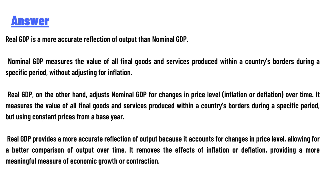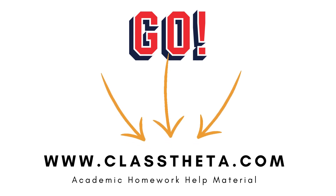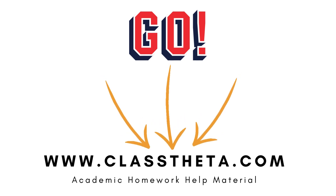Real GDP provides a more accurate reflection of output because it accounts for changes in price level, allowing for better comparison of output over time. It removes the effects of inflation or deflation, providing a more meaningful measure of economic growth or contraction.